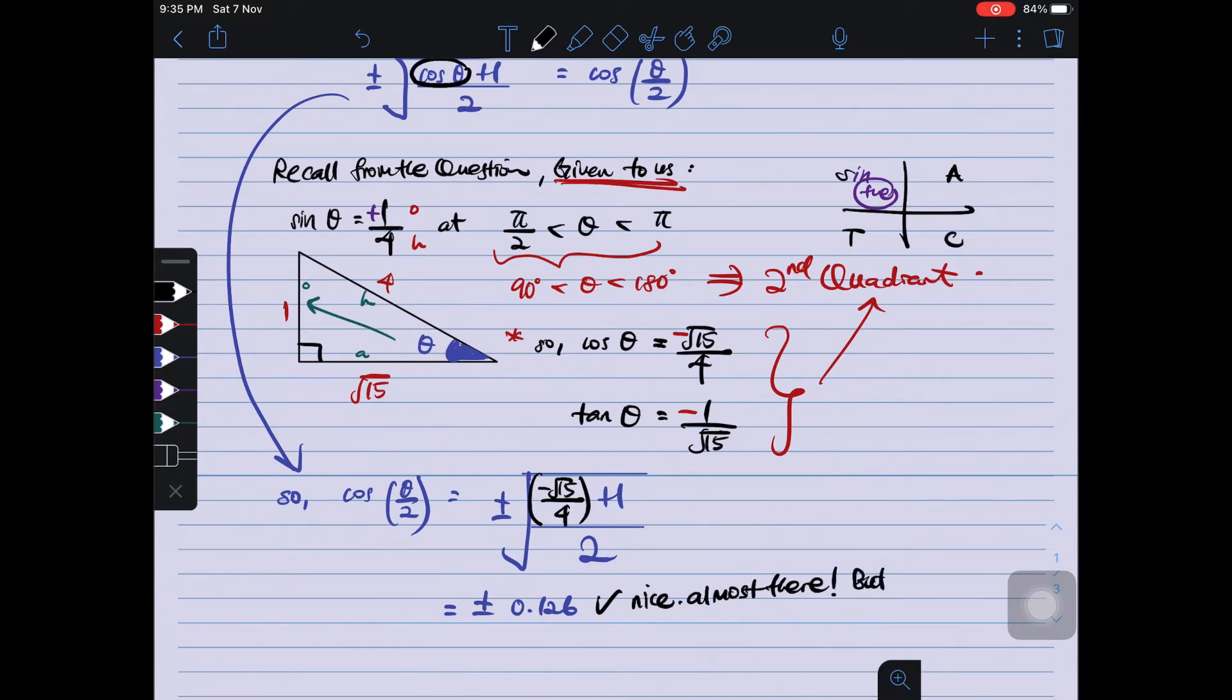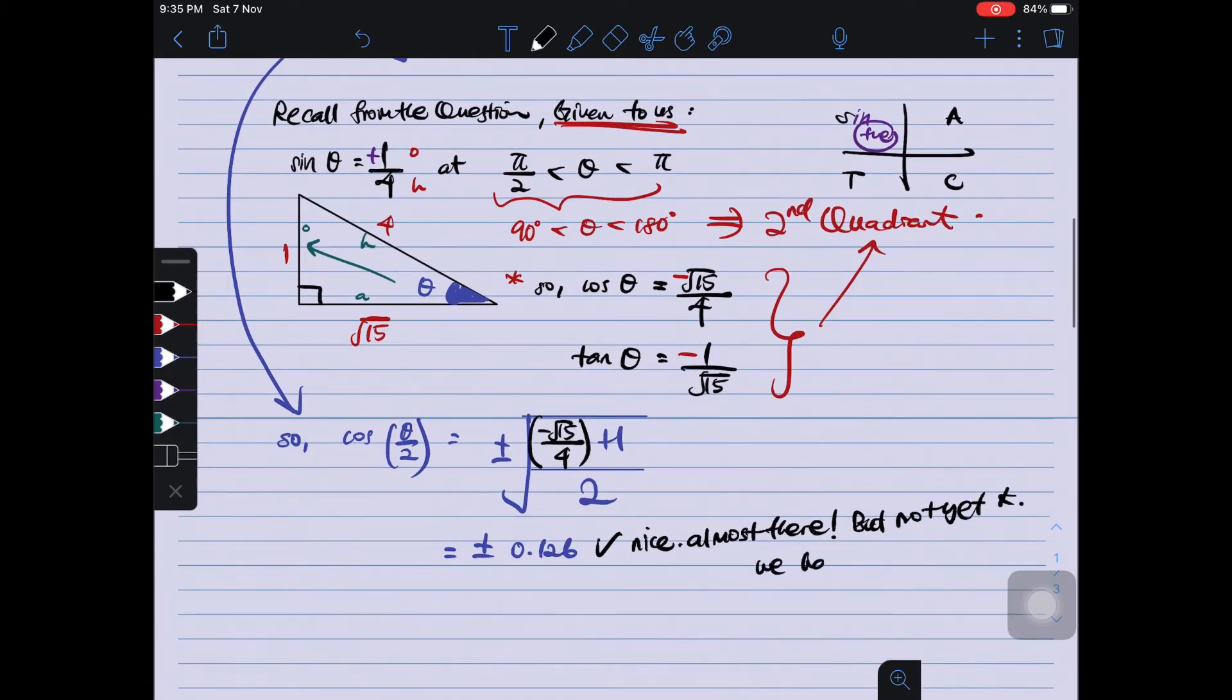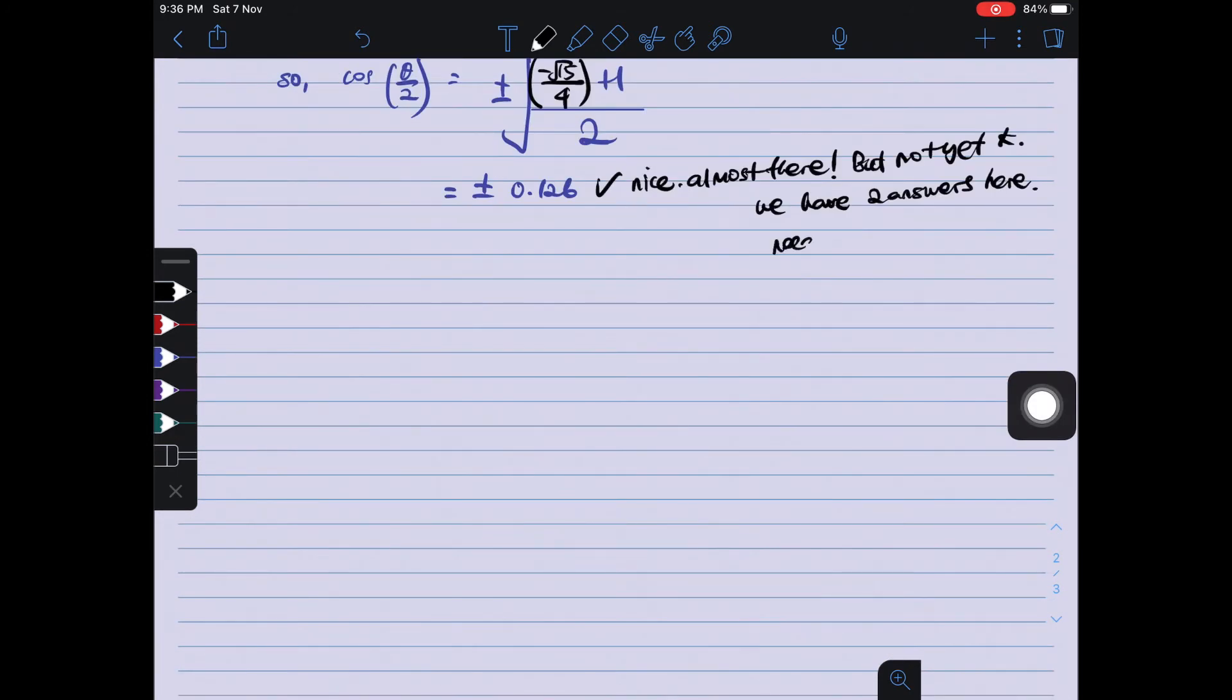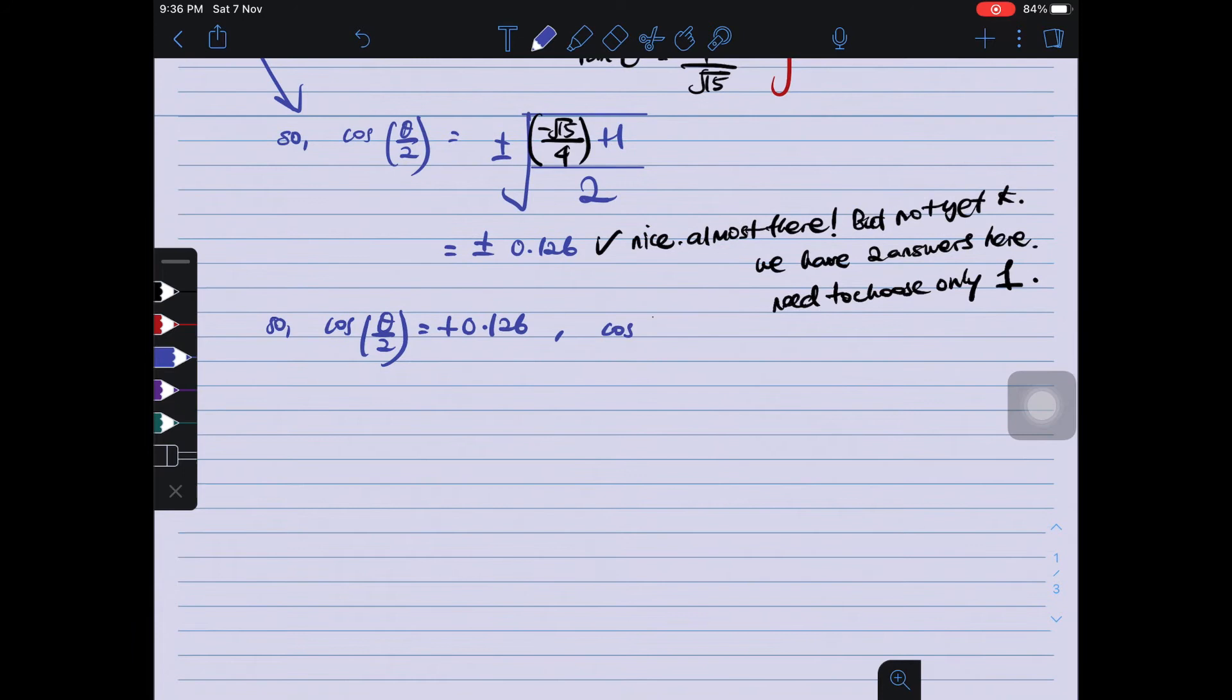Nice. We're almost there. But we are not there yet. Not yet. Because, kita ada dua nilai here. We only want one of them. Macam mana nak tahu which one? Macam mana saya nak tahu which answer is correct?